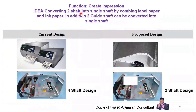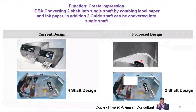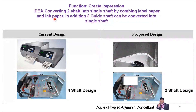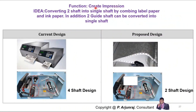The first idea is based on the function 'create impression.' The idea is to convert the four shafts into two shafts by combining the label paper shaft with the ink paper shaft — similar to how a typewriter clubs the black and white ribbon together. In this printer, there are basically four shafts: two for the paper and two for the ink. I am going to club these four shafts into two shafts. Even when I eliminate those two shafts, the basic function 'create impression' is not going to get affected. That is how ideas coming from function analysis will be very effective, and we can evaluate and go for implementation.